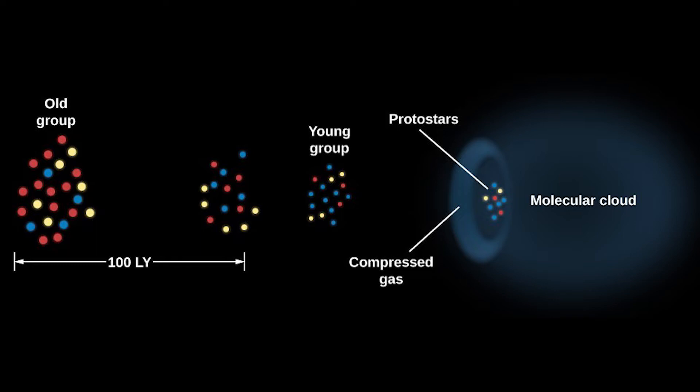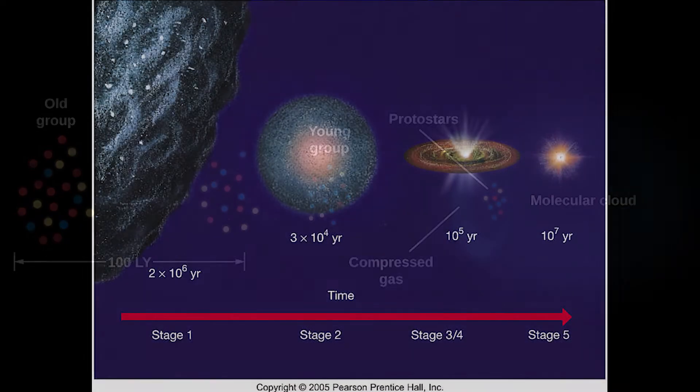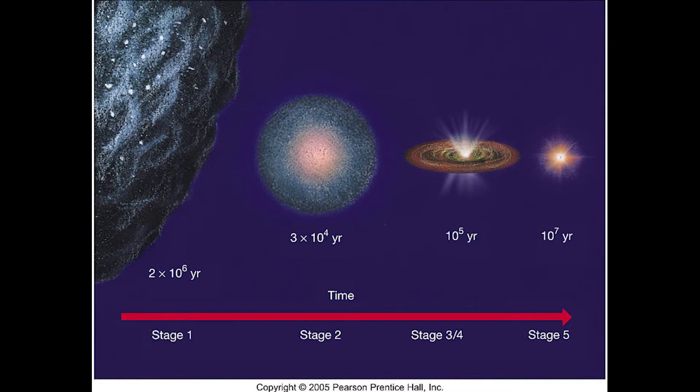As these clumps get bigger and bigger, their gravity gets stronger and stronger. Eventually, the clump of dust and gas gets so big that it collapses under its own gravity. The collapse causes the material at the center of the cloud to heat up, and this hot core is the beginning of a star, which is known as the protostar.